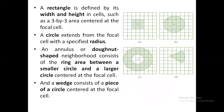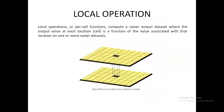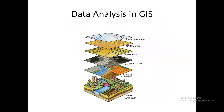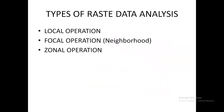So we saw about how data analysis is used in GIS and how data analysis works in GIS. After that, we saw about the types of raster data analysis: local, focal, and zonal. Thank you.